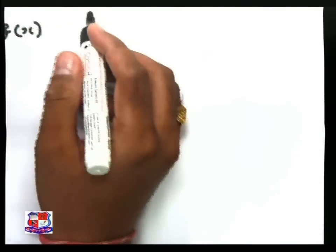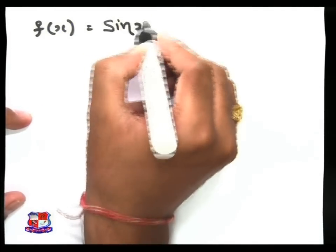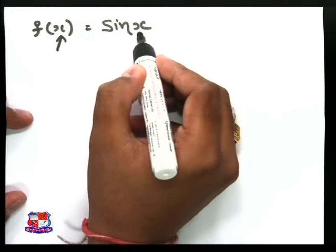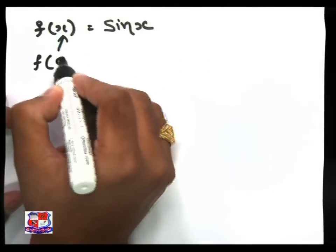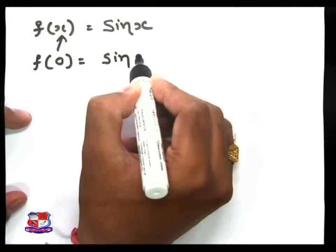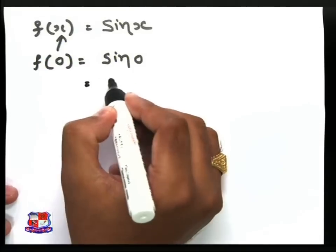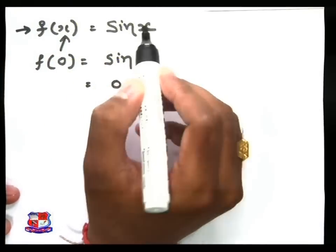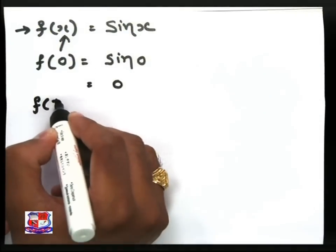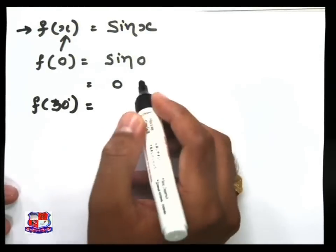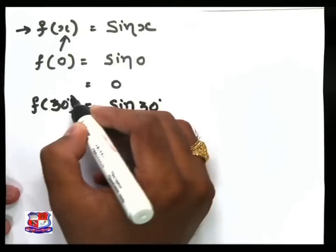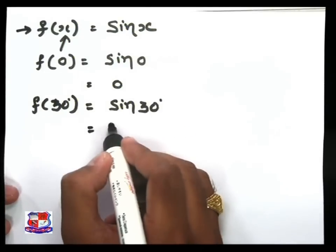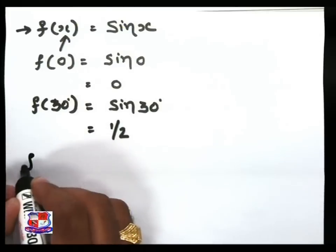Suppose f of x is equal to sin x. So sin x is a function, and whatever value of x we put here — if x is equal to 0 degrees, then we write sin 0, and the value of sin 0 is 0. So f of x is equal to sin x. Similarly, f of 30 degrees is equal to sin 30 degrees, and sin 30 degrees equals 1/2.